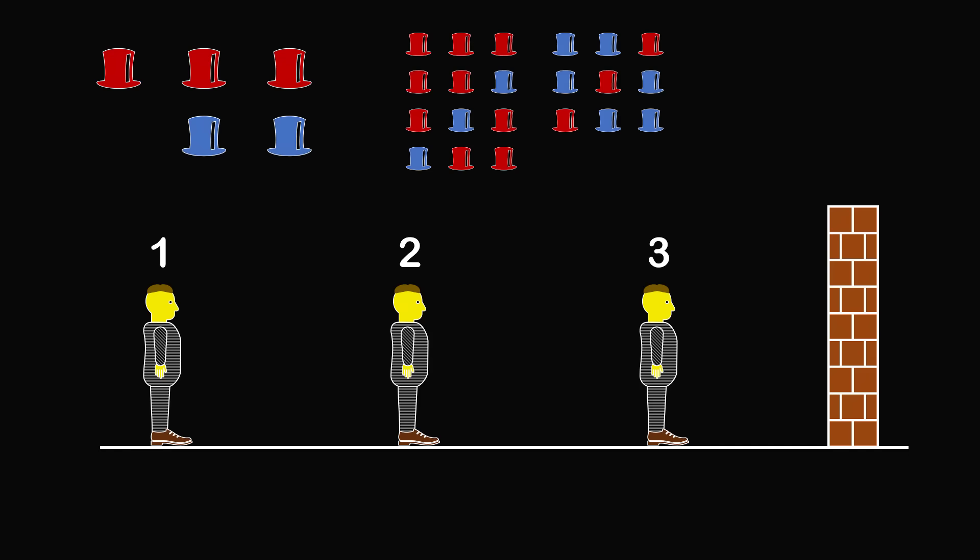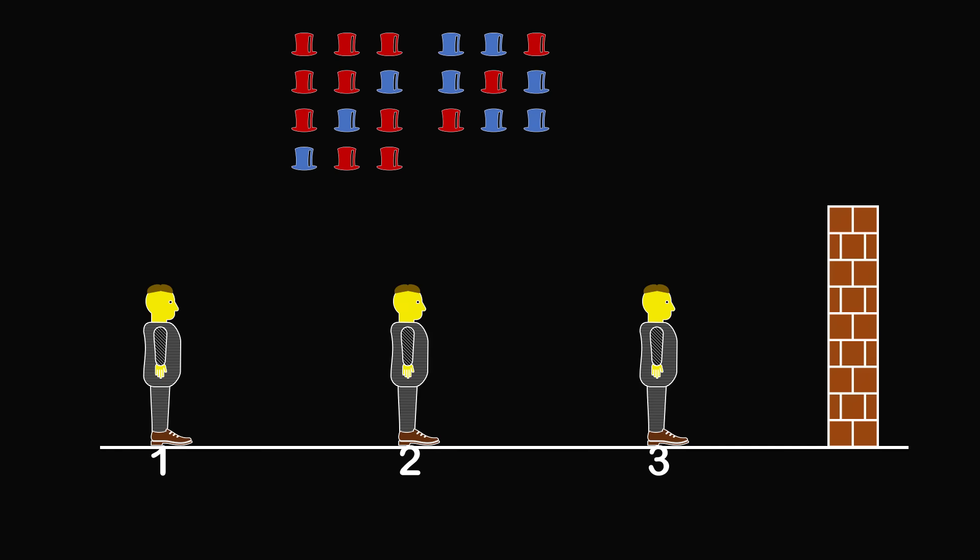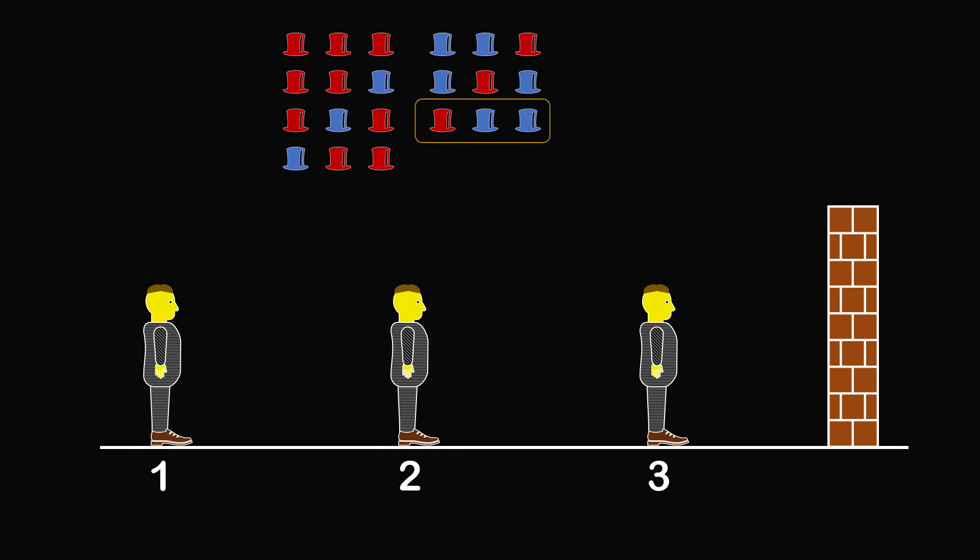So now let's start reasoning with prisoner 1. Let's consider one of the cases. Imagine we are in the case of red, blue, blue. So that's a red hat on prisoner 1, and blue hats on prisoners 2 and 3. So prisoner 1 sees a blue hat on prisoner 2 and a blue hat on prisoner 3.